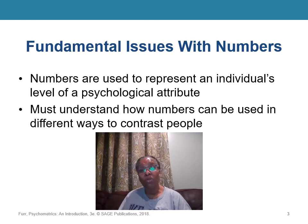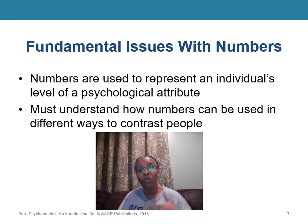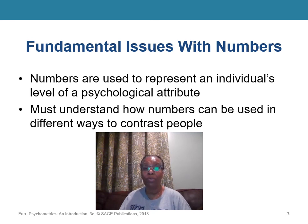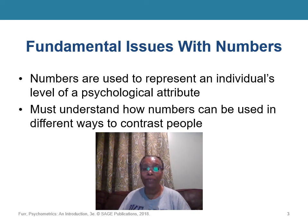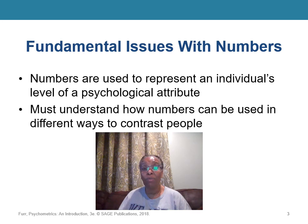We must first understand the meaning of zero. The numerical properties of identity, order, and quantity are reflected by how numerals represent potential differences in psychological attributes. Zero must be considered a complex number, and this complexity will have different kinds of meanings within test scores. A score of zero can have an enormously different meaning in various measurement frameworks.